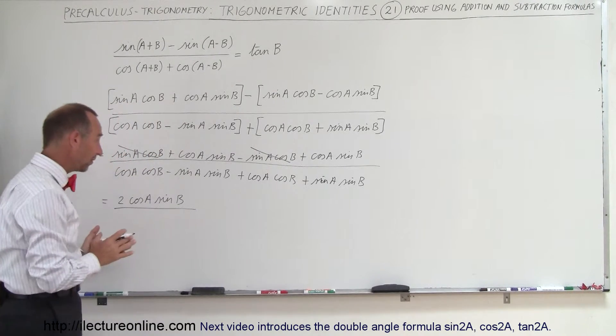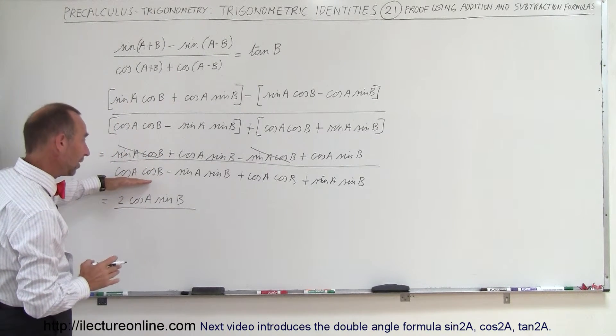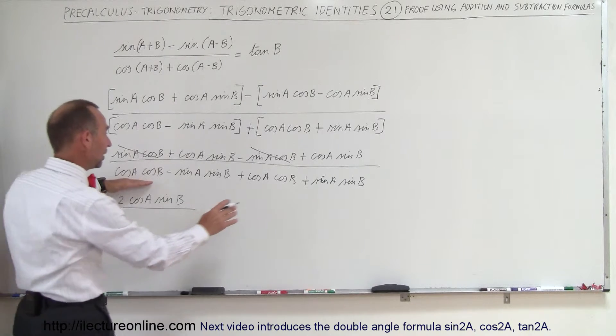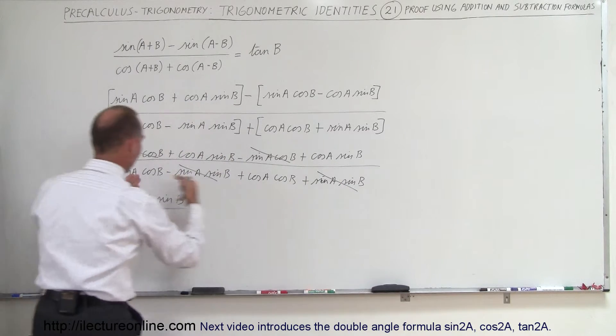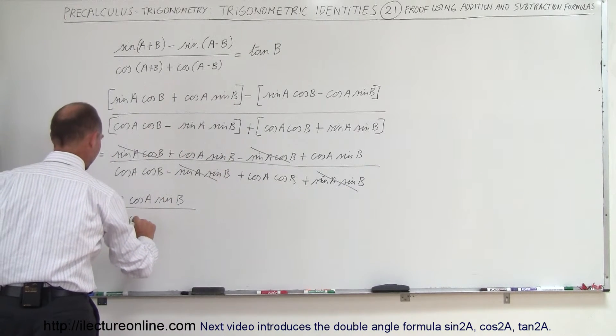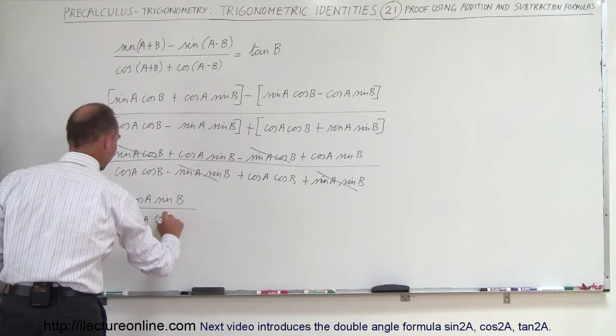Divided by, let's see what simplifies in the denominator. Cosine a, cosine b, cosine a, cosine b, that's additive. Minus and plus, so these two cancel out right here, and we add those two together, so we have two times the cosine of a times the cosine of b. Now notice that the twos cancel, the cosine of a cancels.